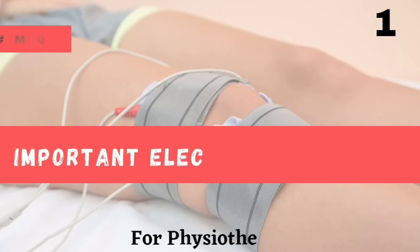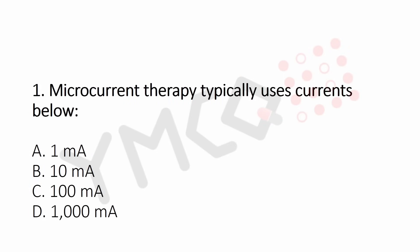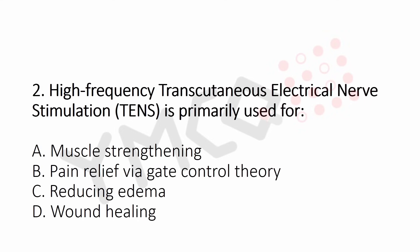Hello everyone, we're going to start our new series on electrotherapy. Question 1: Microcurrent therapy typically uses currents below — Option A: 1 microampere, Option B: 10 microamperes, Option C: 100 microamperes, Option D: 1000 microamperes. The answer is Option A: 1 microampere. Question 2: High-frequency TENS is primarily used for — Option A: muscle strengthening, Option B: pain relief via gate control theory. The answer is Option B: pain relief via gate control theory.